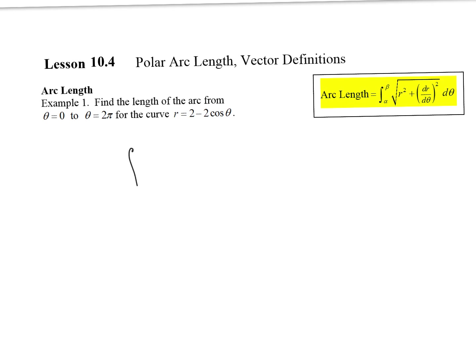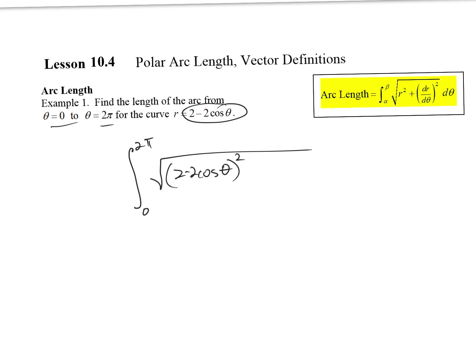We didn't really need any of that for this problem. So let's set it up: the integral from zero to two pi, throw everything in here. You have r², so put this in first. Now do the derivative — what would dr/dθ be? Two sine of theta. Right, it's nothing hard. So we have the square root of r² plus (2 sin θ)², dθ.